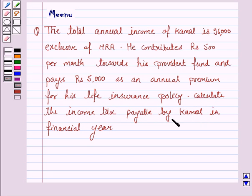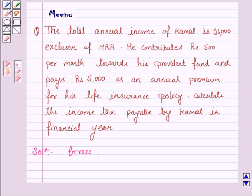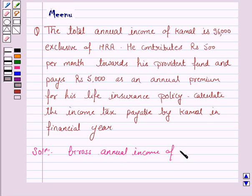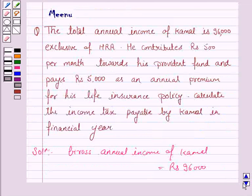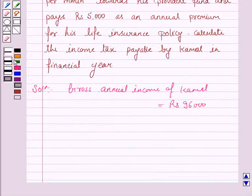Calculate the income tax payable by Kamal in the financial year. Now we see that the gross annual income of Kamal is Rs. 96,000. According to the current financial year, if the taxable income does not exceed Rs. 1,00,000, then the rate of tax is nil. And here the gross income of Kamal is Rs. 96,000, so there is no tax.